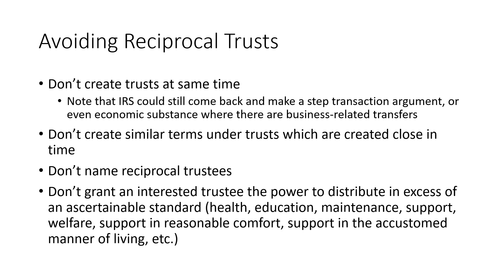Another issue is not to name reciprocal trustees. You don't want husband and wife as settlor and trustee and vice versa, or siblings as cross-trustees for each other. And then, in the rare event that trusts are uncrossed, one way you can avoid any issue is by not granting an interested trustee the power to distribute in excess of an ascertainable standard, such as health, education, maintenance, and support. Because if the trusts are uncrossed — especially in a situation where you have siblings as cross-trustees — there is no general power of appointment issue as long as you limit the discretionary distribution standards.